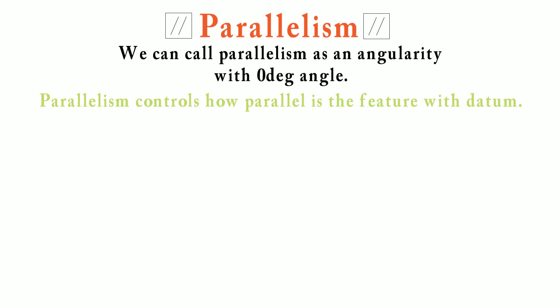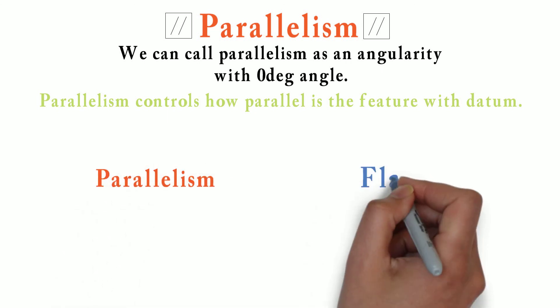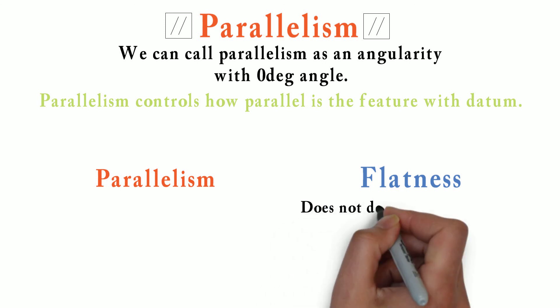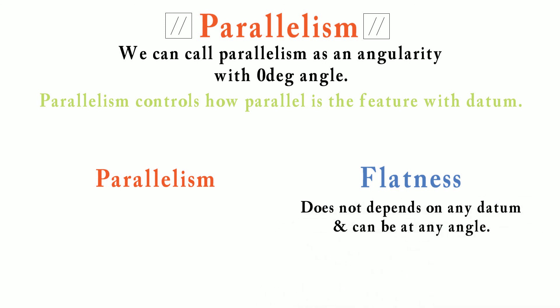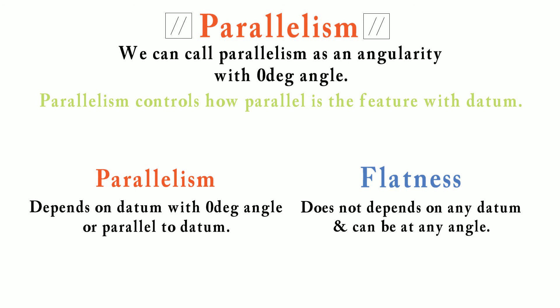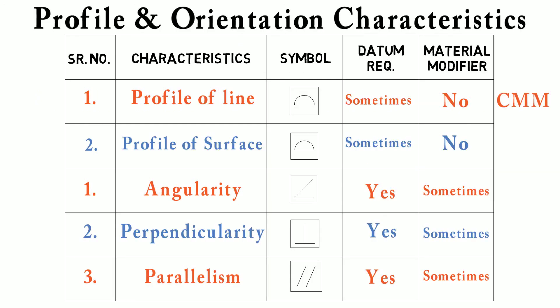Don't get confused between parallelism and flatness — both terms are quite different. Flatness is not dependent on any datum and can be at any angle, while parallelism is dependent on a datum with 0 degree angle or parallel to the datum. If you find our content useful, please like the video and subscribe to our channel.